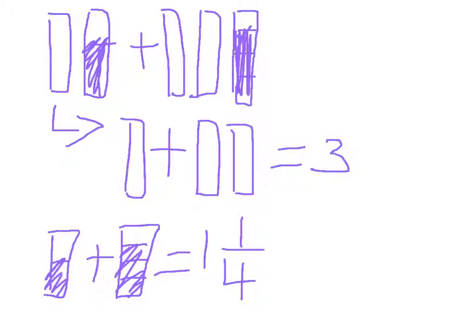So finally, three plus one and a fourth equals four and one fourth.